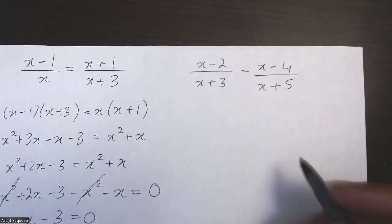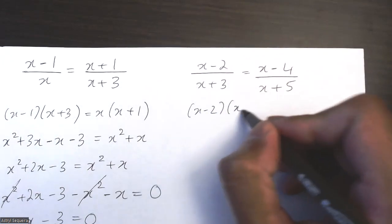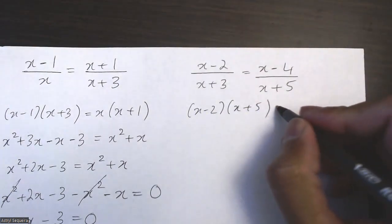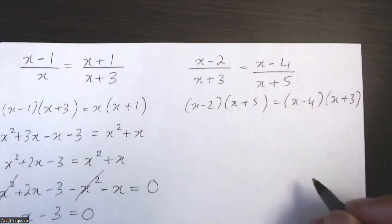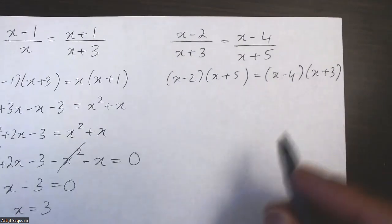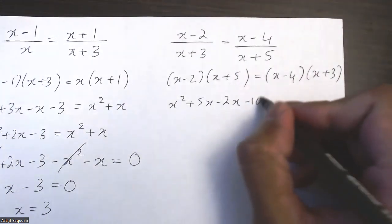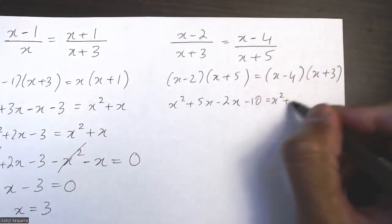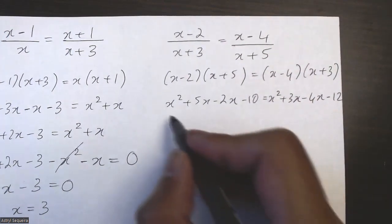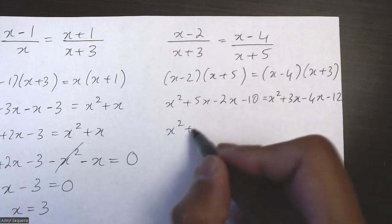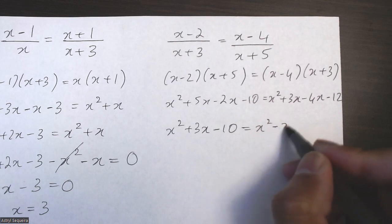For the last one, we again start with cross multiplication: (x - 2) times (x + 5) equals (x - 4) times (x + 3). I'll FOIL out both sides: x squared + 5x - 2x - 10 equals x squared + 3x - 4x - 12. Combining like terms on both sides gives 3x - 10 on the left and minus x - 12 on the right.